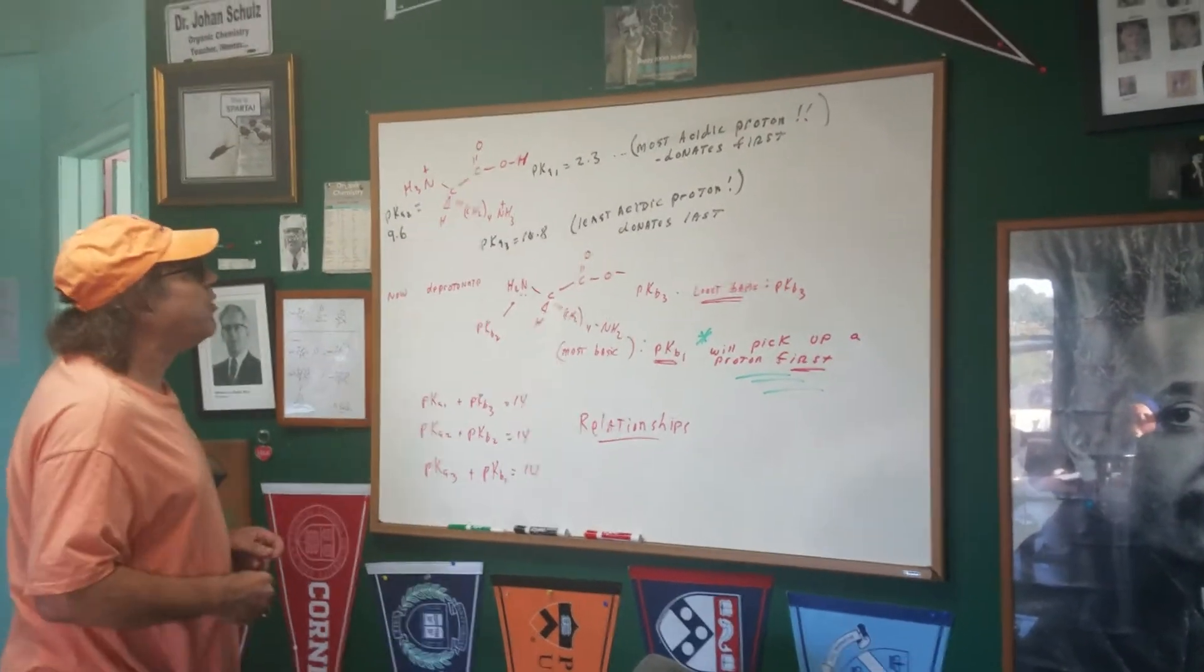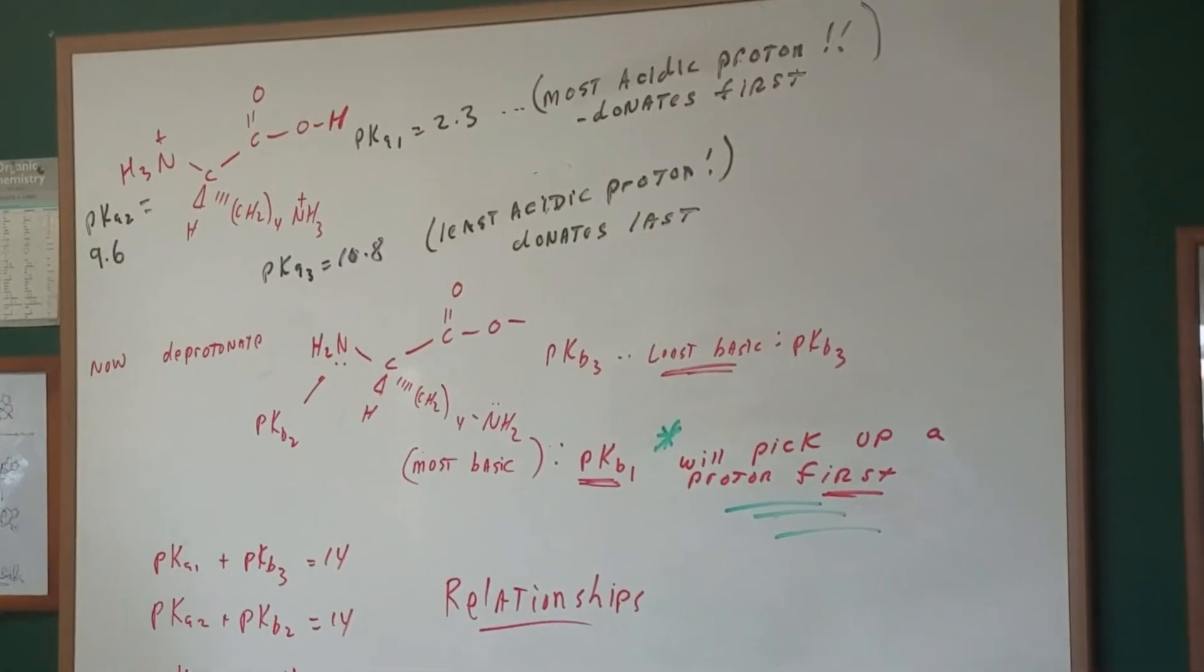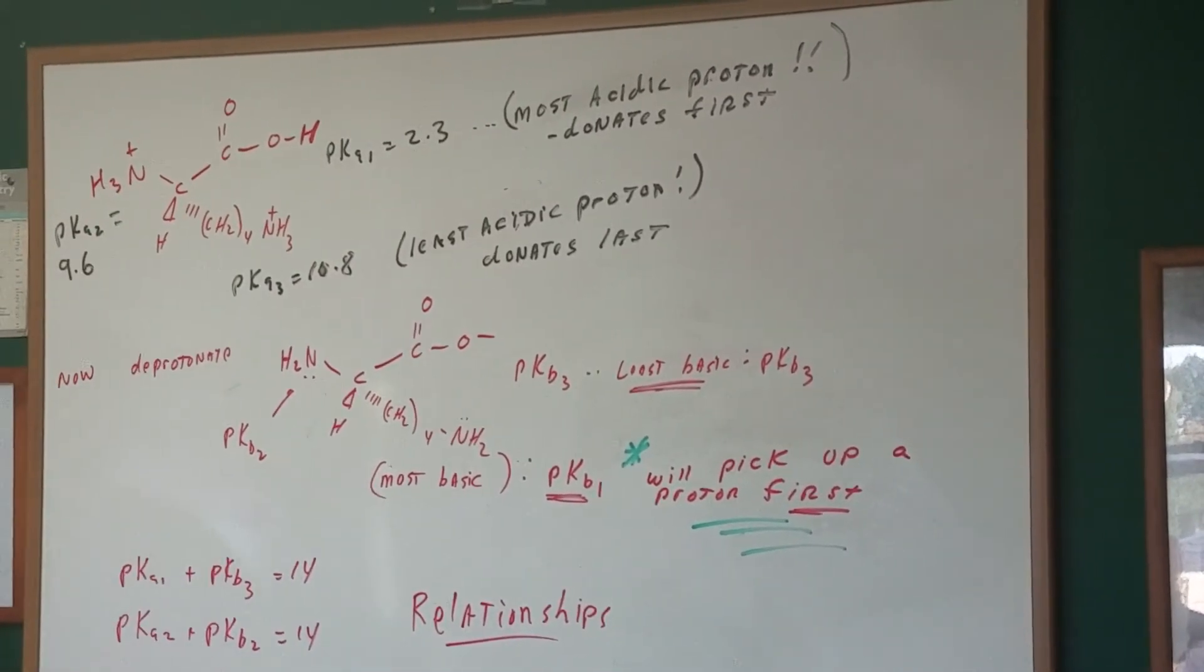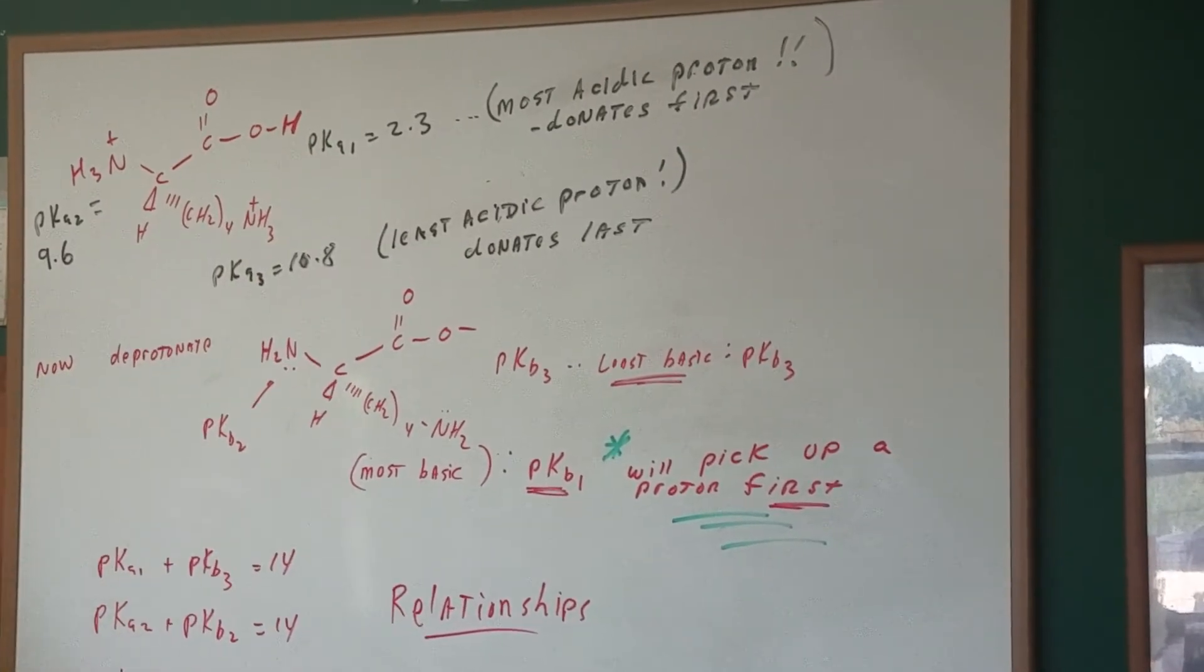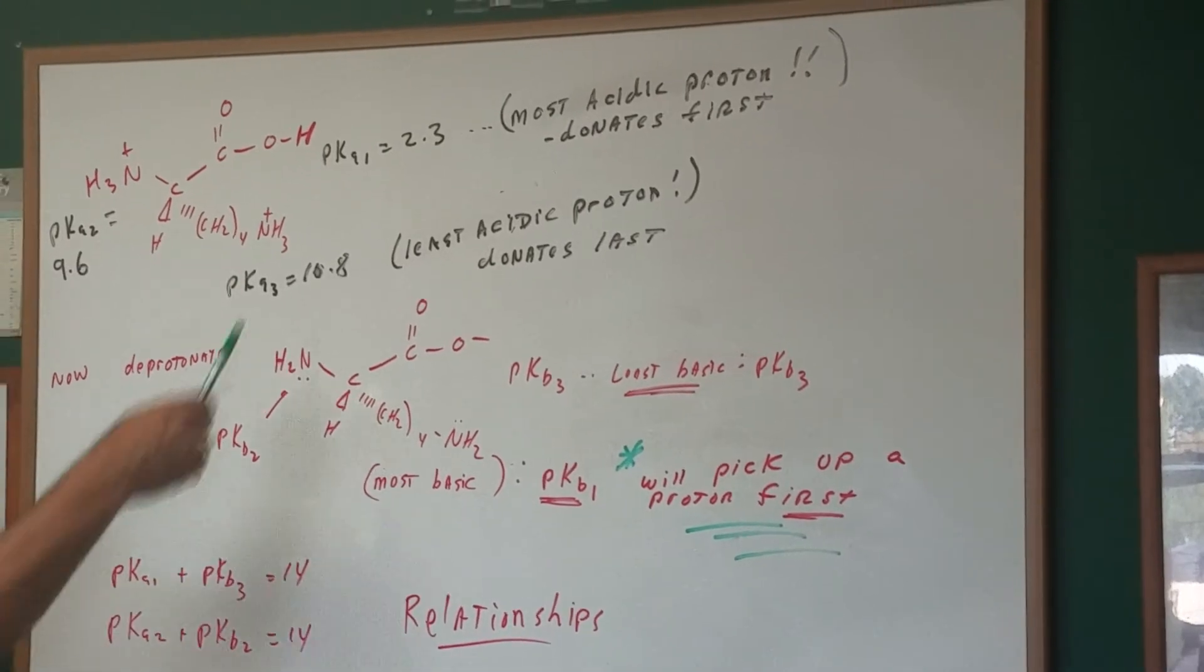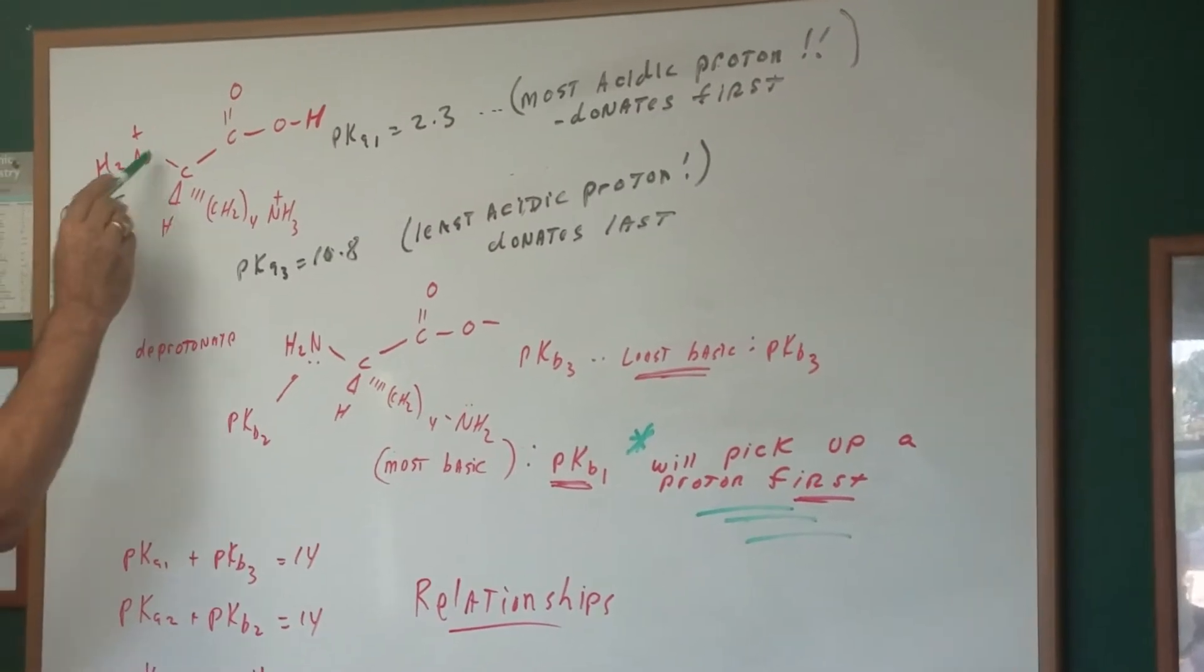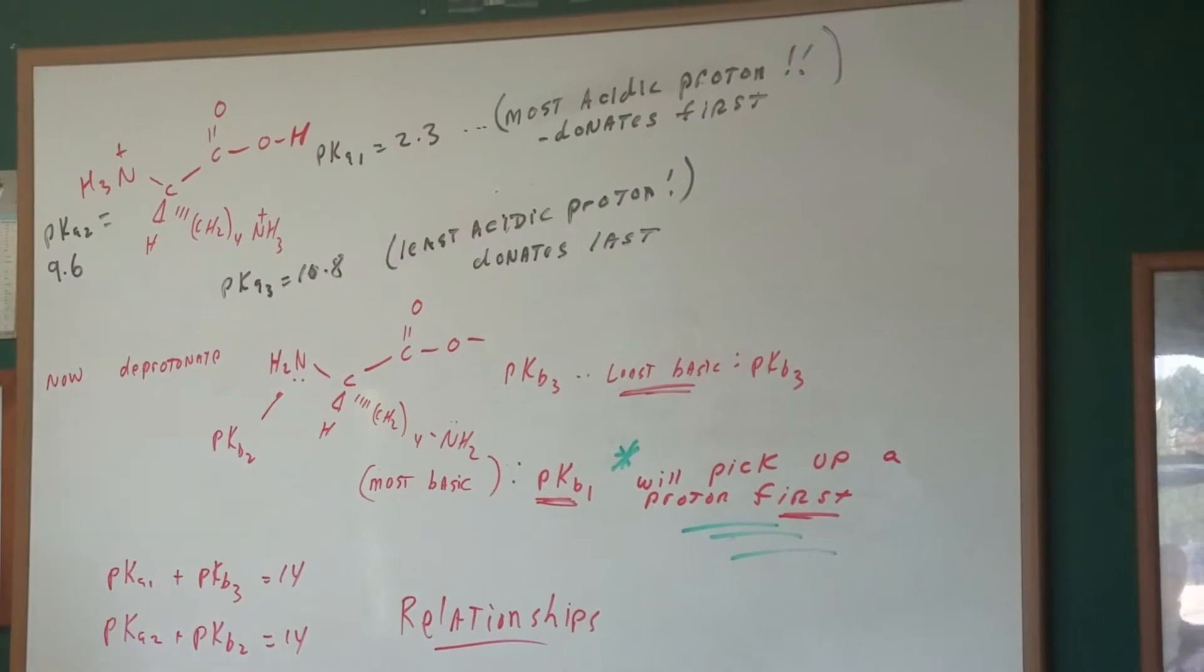I'm going to give you the amino acid lysine. Notice I'm going to protonate all the groups: the carboxyl group, the side chain, and the alpha amino group, and I assign PKAs. Last week we said that PKA1 was about 2.3 for a carboxyl group on an amino acid. So I assign 2.3, 9.6 for the alpha amino group, and this side chain is 10.8.